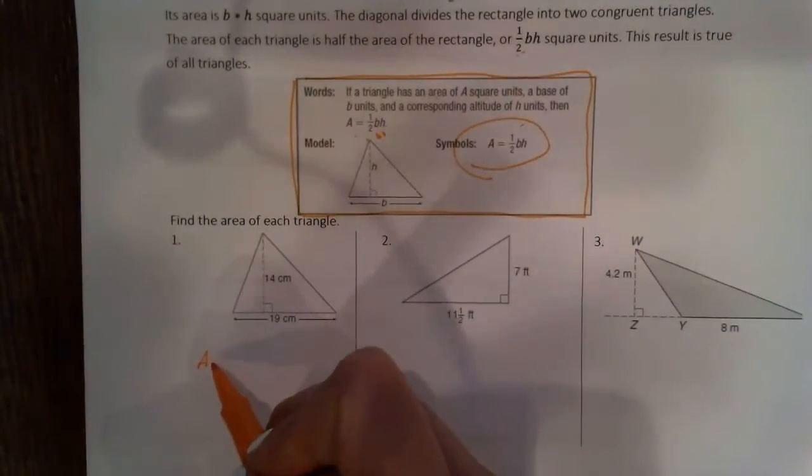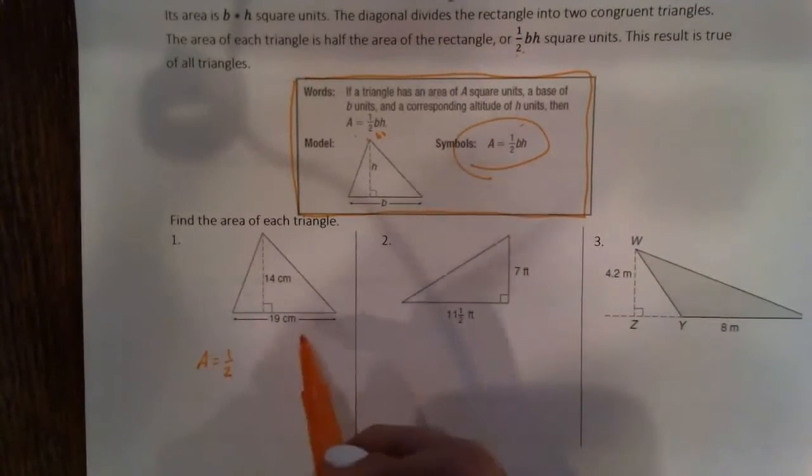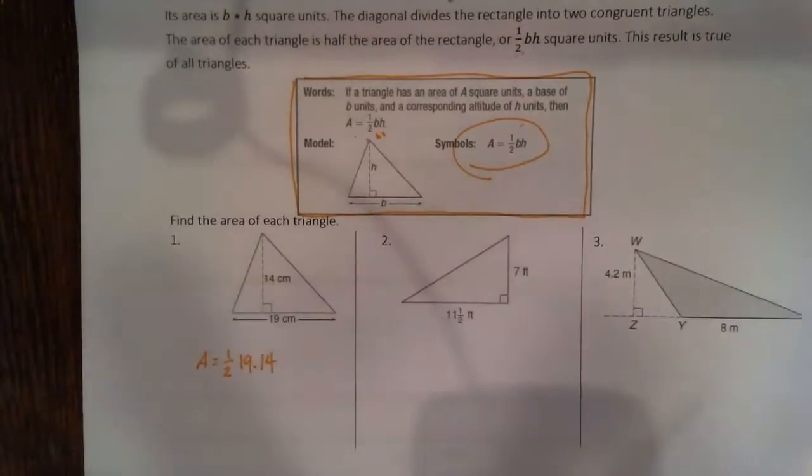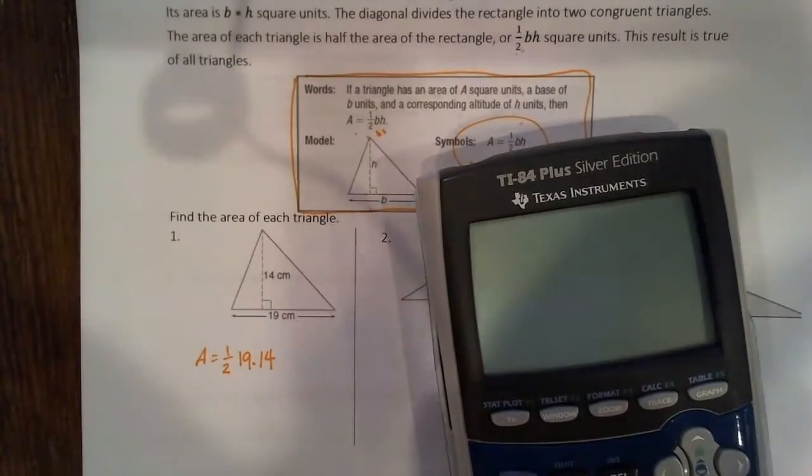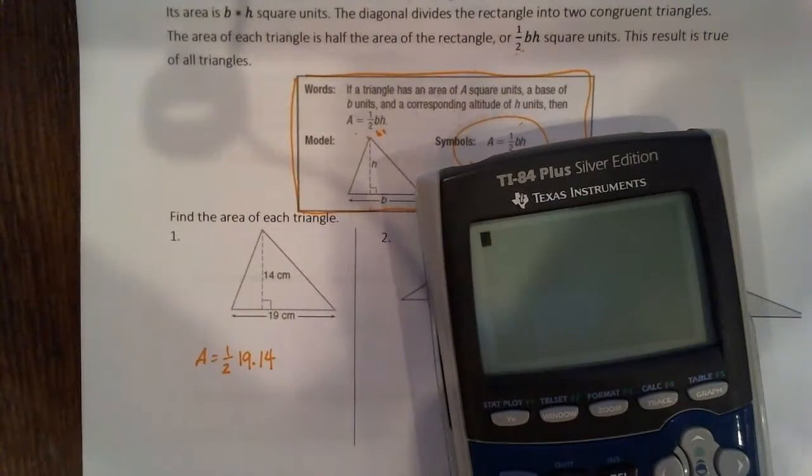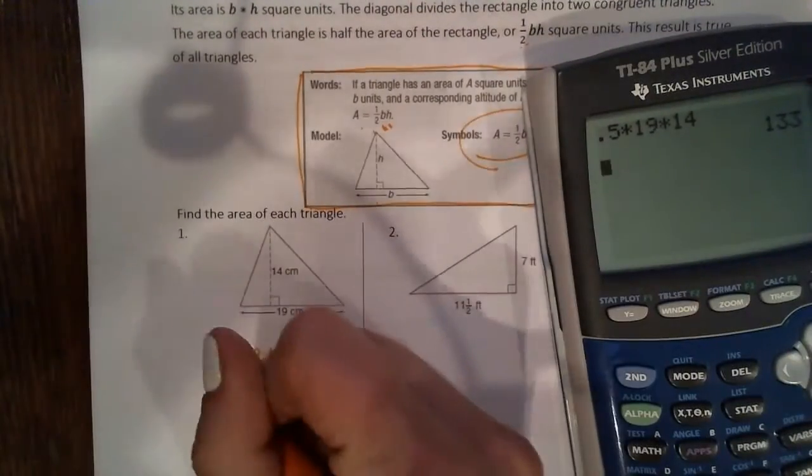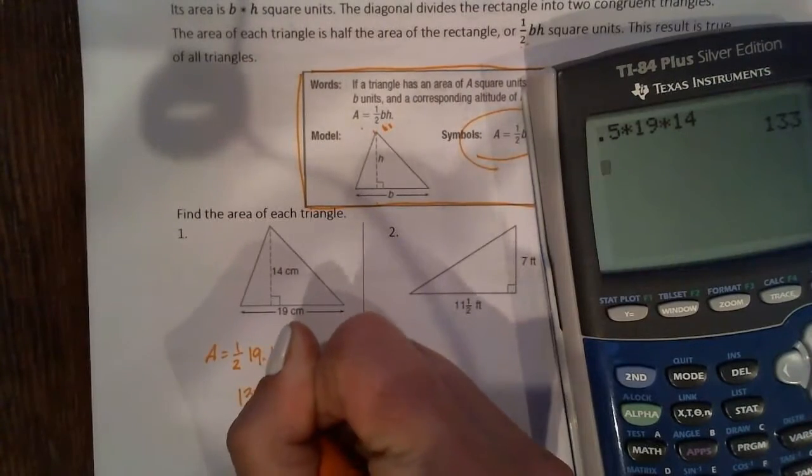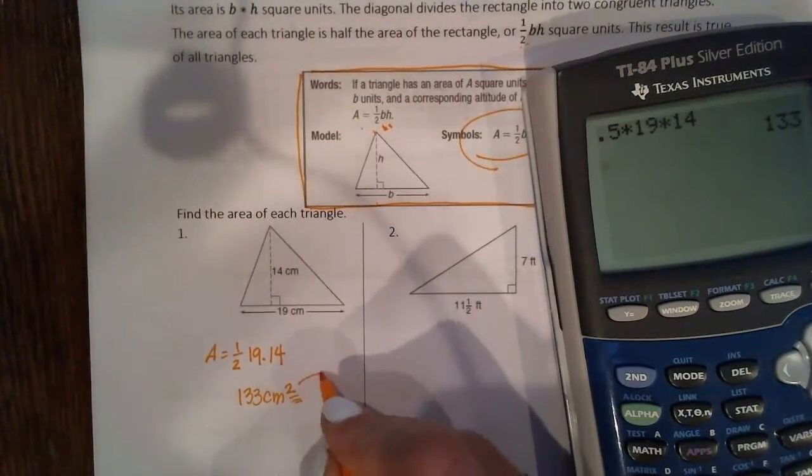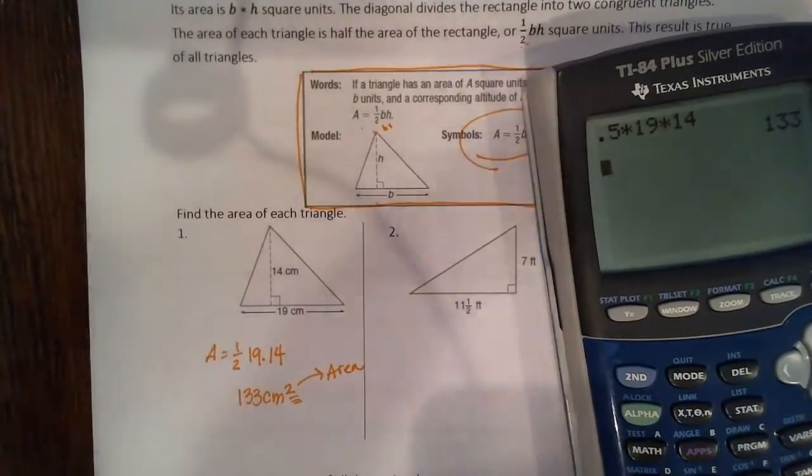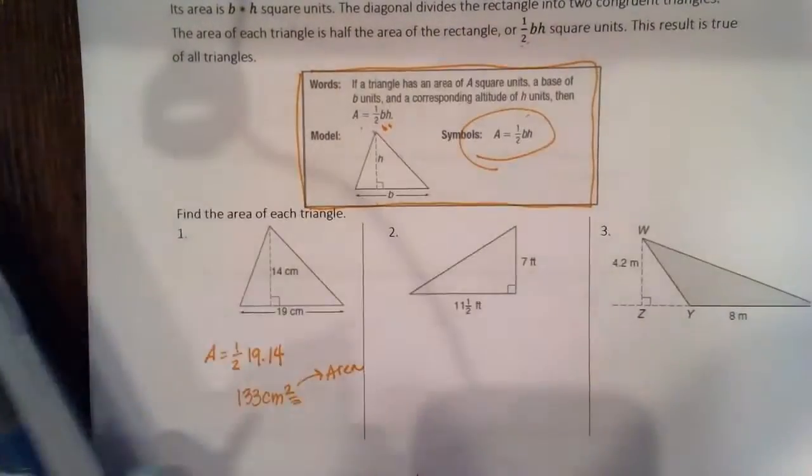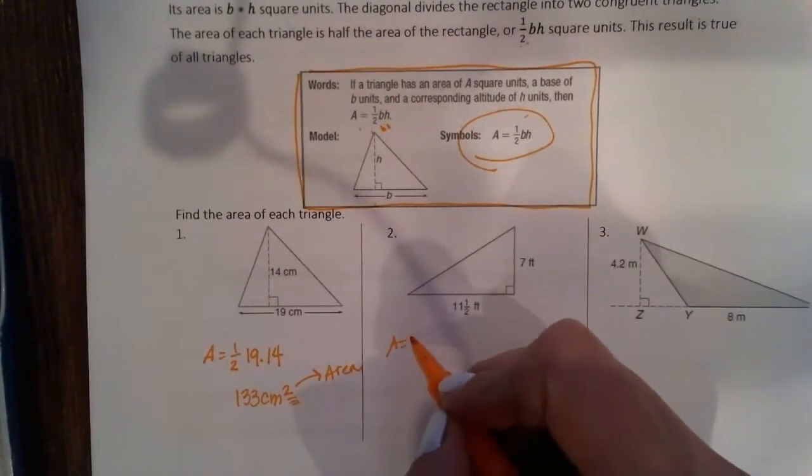If we come down here, we're looking for our area. One-half base 19 times height 14. If you guys are doing this in your calculator, I would suggest just doing all three right away. So I would do 0.5 times 19 times 14 and we get our area to be 133 centimeters squared because it's area. Don't forget that squared.